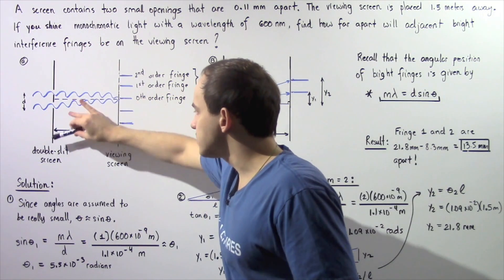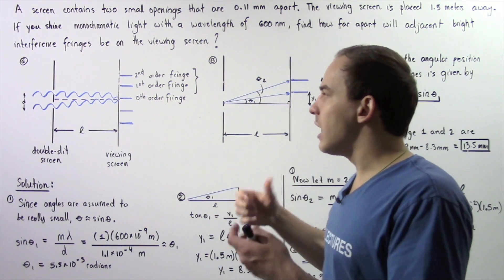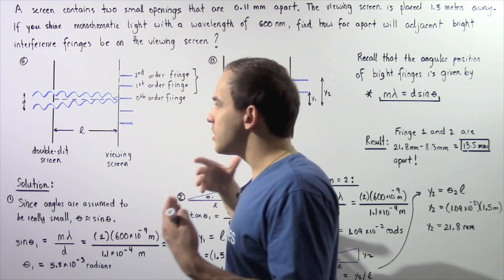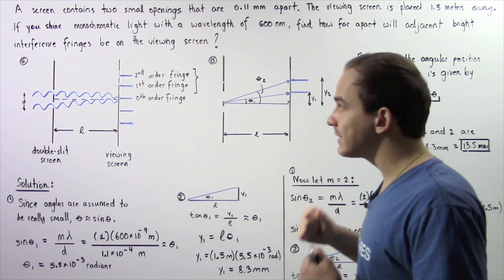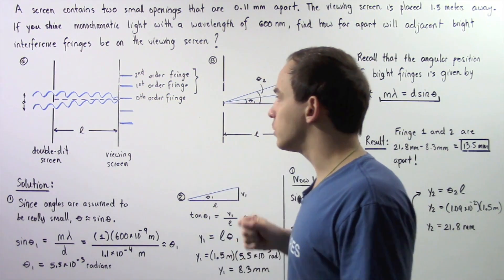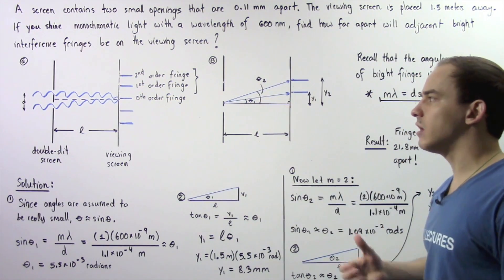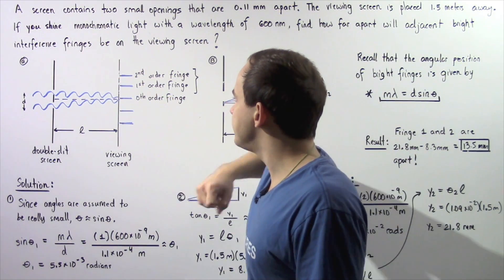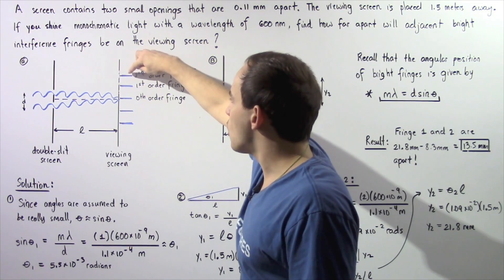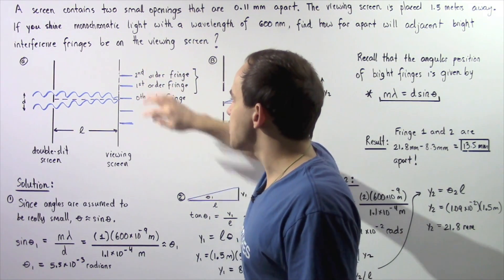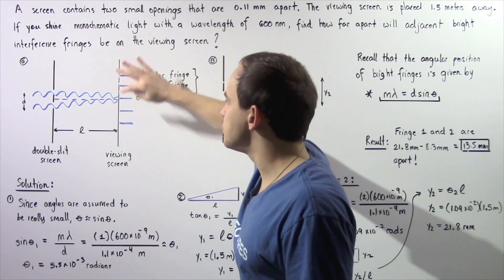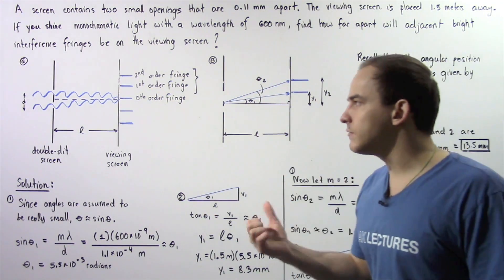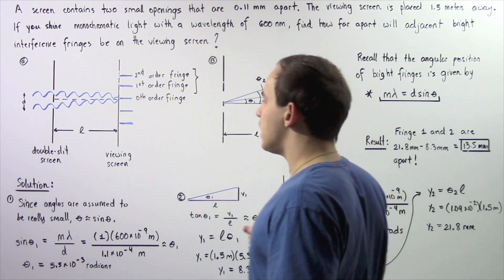We have the double slit screen, and the waves of light coming through the two openings essentially diffract. The following bright and dark fringes are formed as a result of wave interference. Constructive interference between the waves forms the bright fringes shown by the blue regions, and the regions in between — the dark regions — are formed as a result of destructive interference of these waves of light.